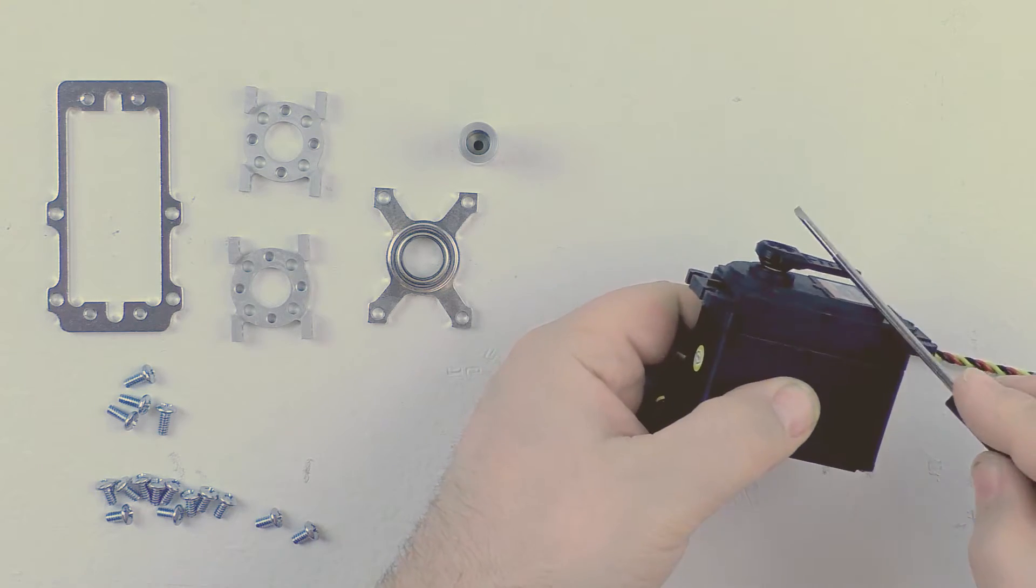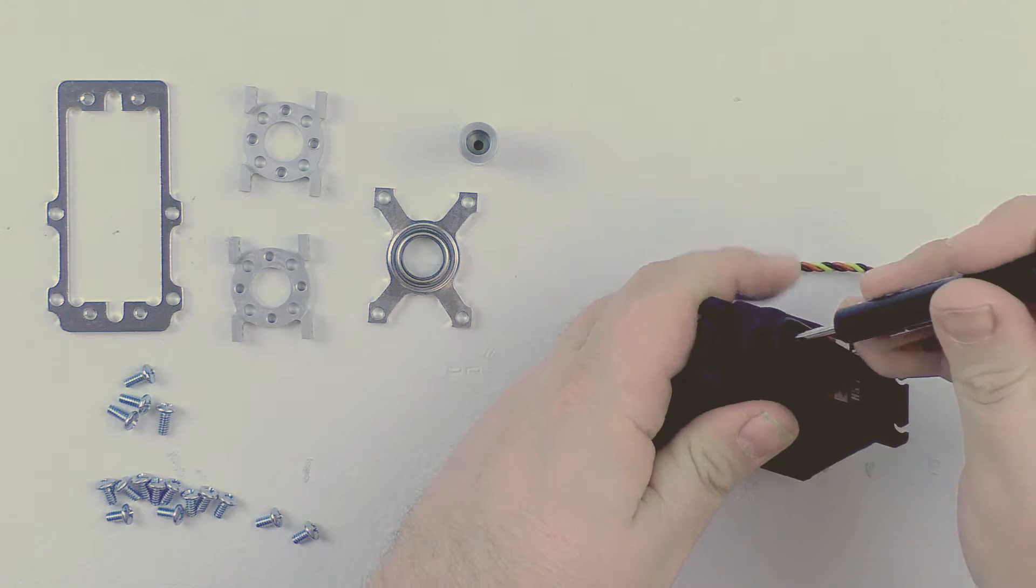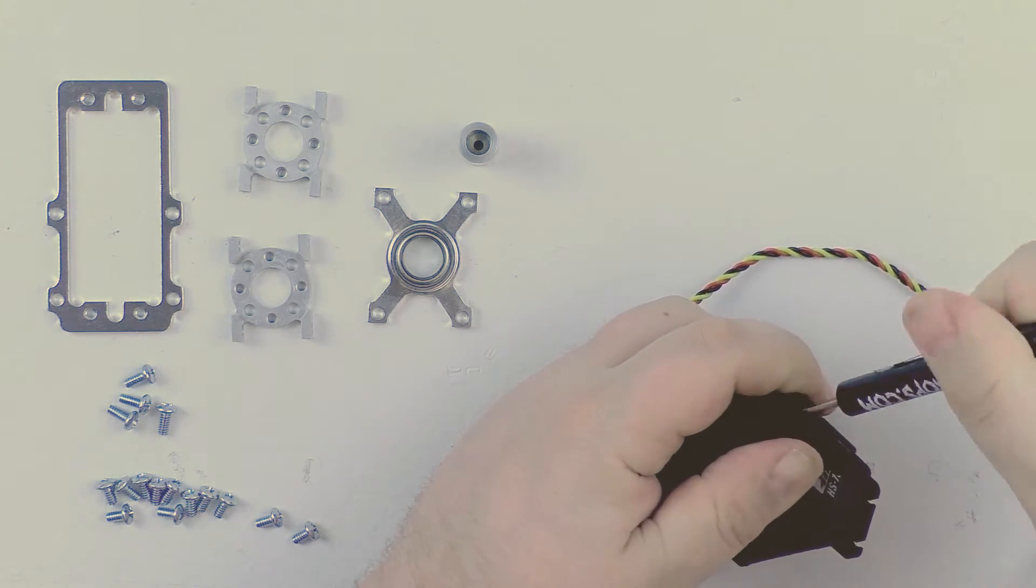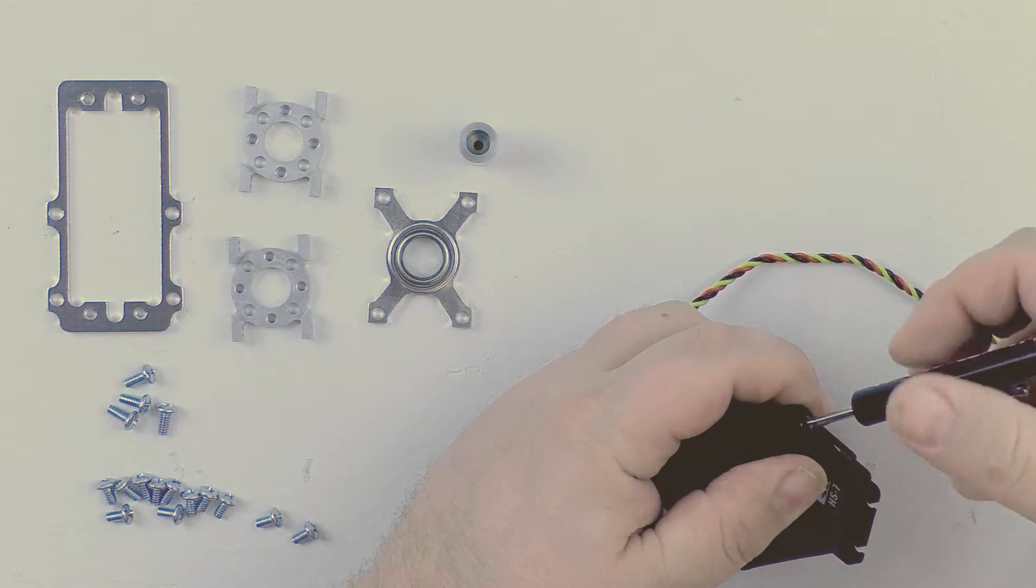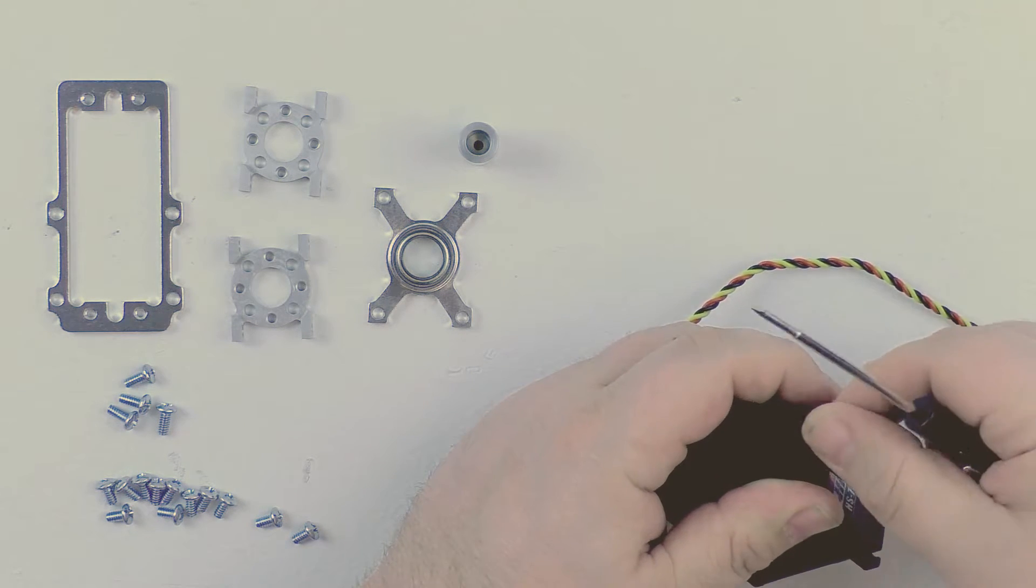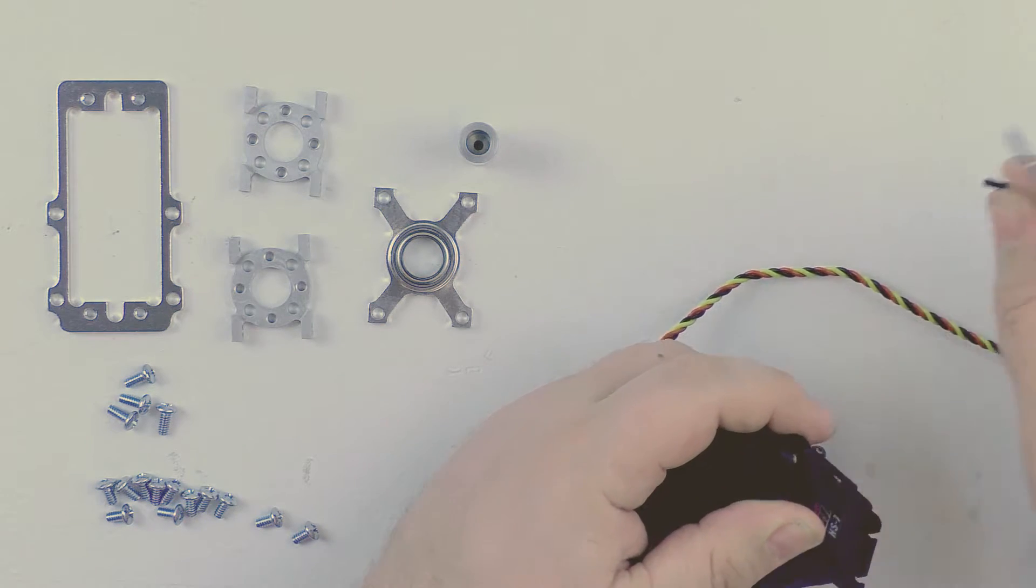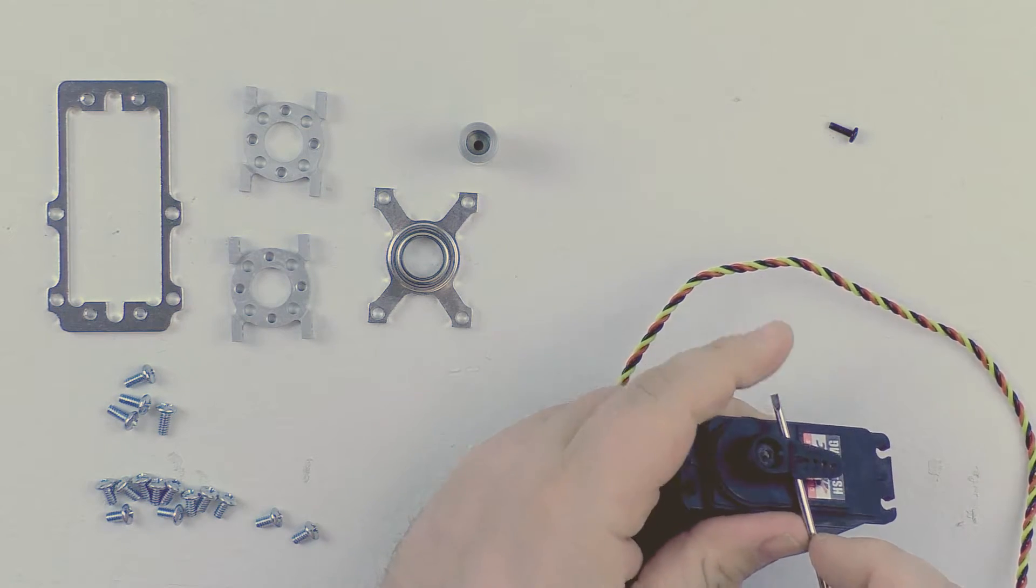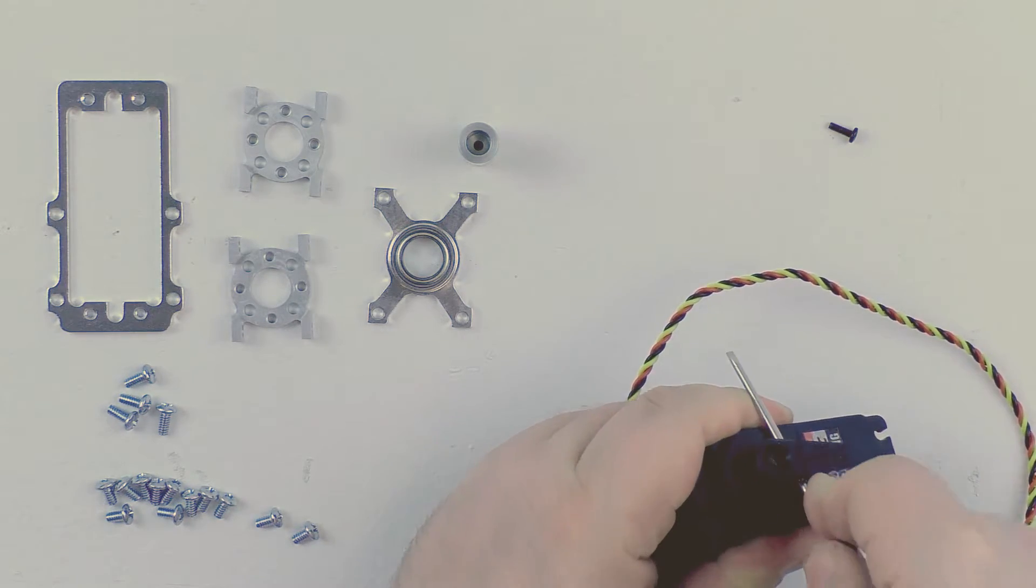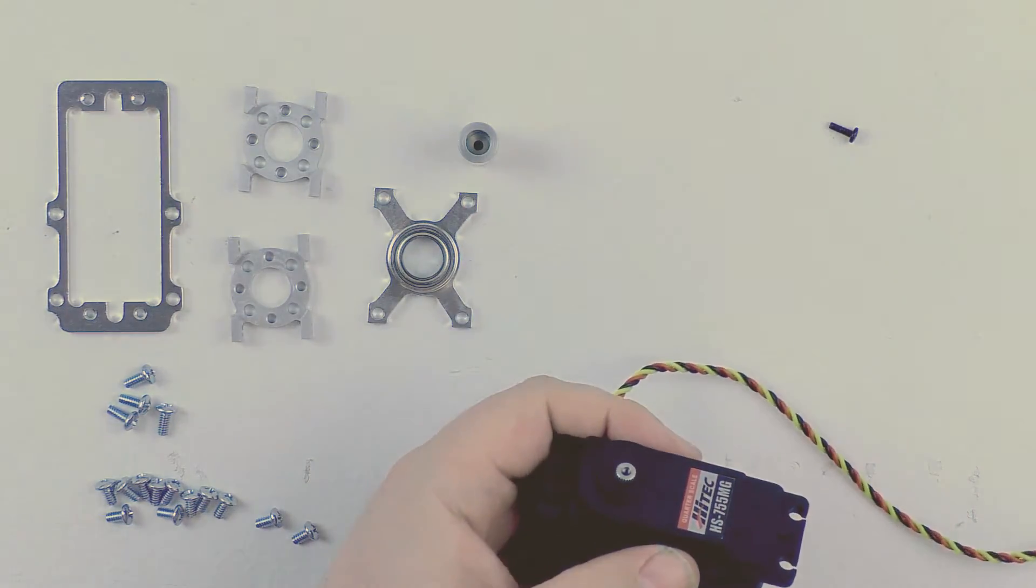All right, so just like the other servo, the first step will be to remove the gear arm that's attached to the servo. Again, there's a threaded screw on the top. We're just going to unscrew that and save that screw. We'll just set it aside. Go ahead and remove the arm. They can be a little bit sticky, so I sometimes find you have to pry it loose, and we can set that aside. We won't need it.